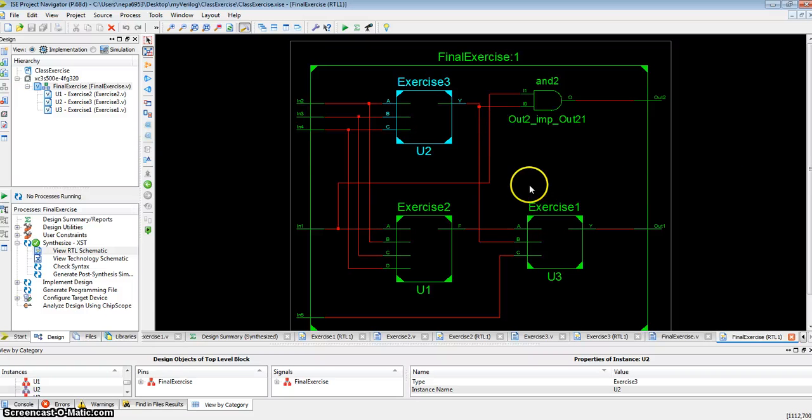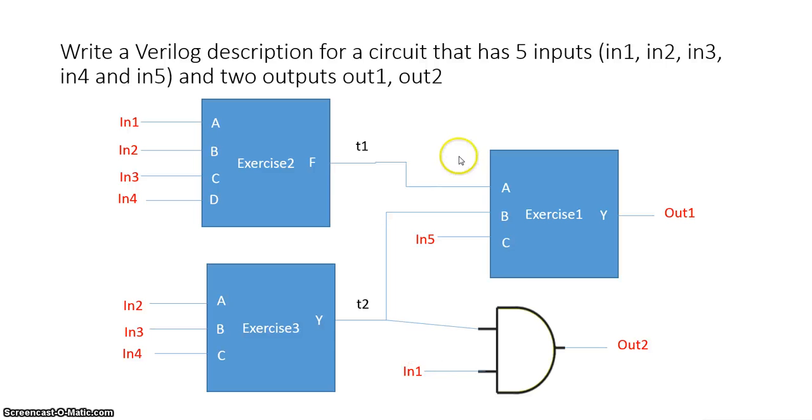Again, we see it's built out of exercise 1, exercise 2, and exercise 3 modules. And an AND2 gate whose output is out2. So AND gate's output is out2. Exercise 1's output is connected to out1. So we can compare this block diagram with this block diagram, and they should hopefully be the same.